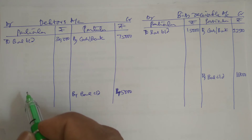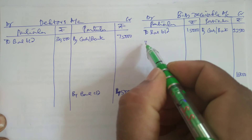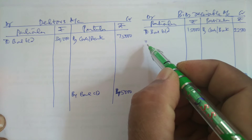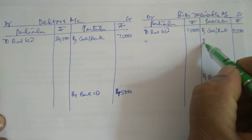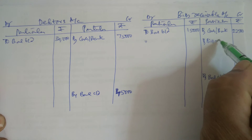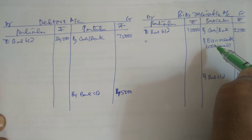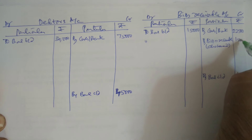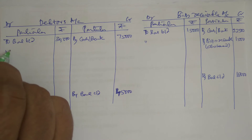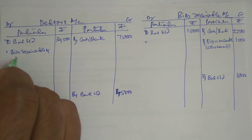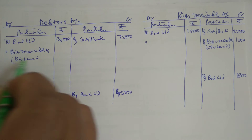Apart from that, there is a bills receivable dishonored amount. Whenever there is a bills receivable dishonored, it must be debited to the debtors account as well as credited to the bills receivable account. By bills receivable — dishonored — the amount is Rs. 1,500. When it is credited to the bills receivable account, it must be debited to the debtors account — bills receivable dishonored — same Rs. 1,500.